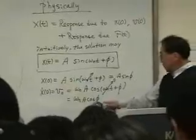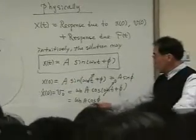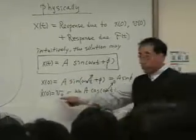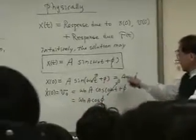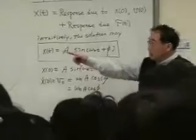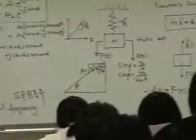And if I square this, I have A squared cosine phi squared equals v0 squared over omega n squared, and if I add them, then I will get A squared, that is look like that. Okay?